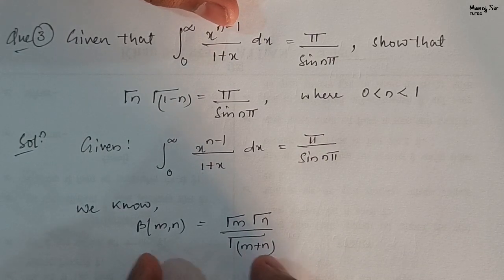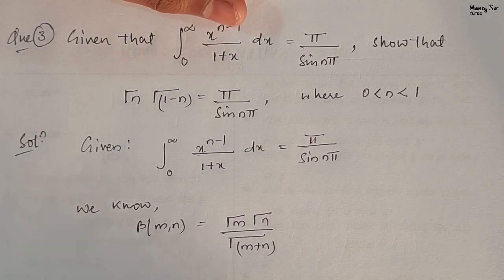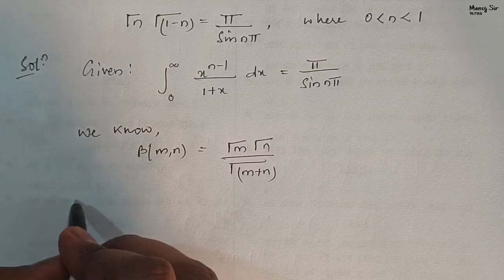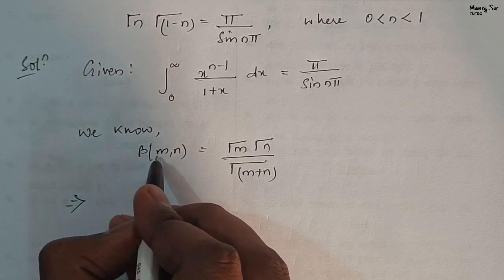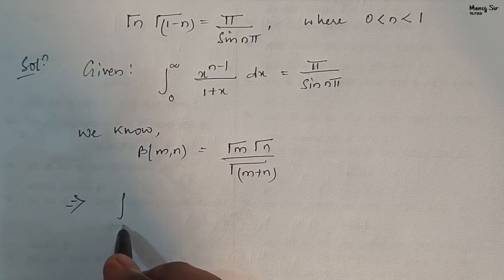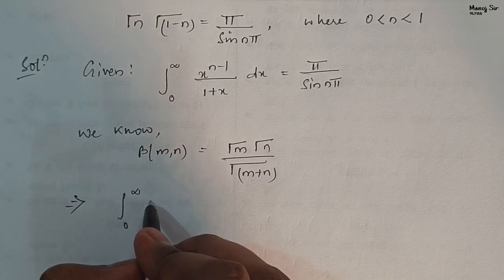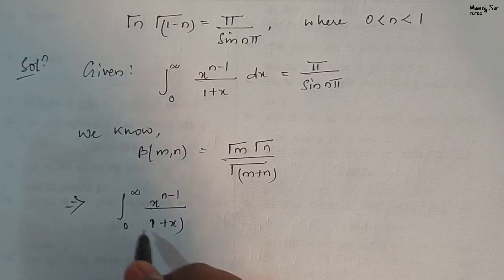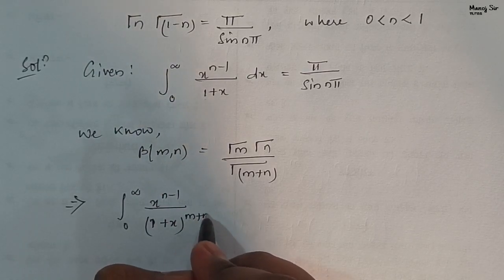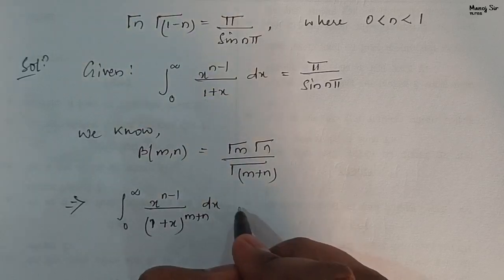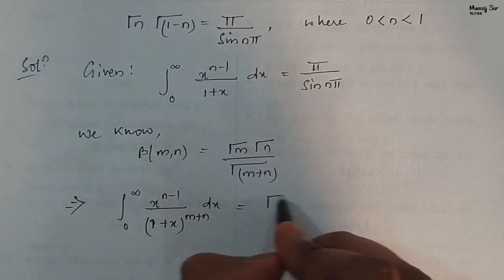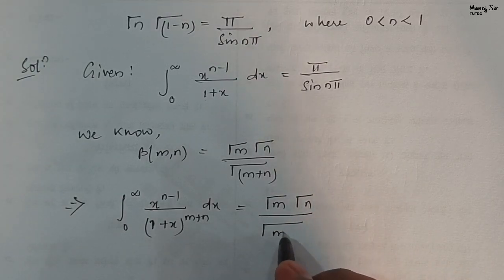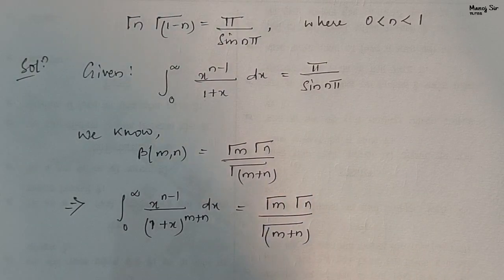This is the relation between beta and gamma function from video number 21. So we can say beta(m, n) equals the integration from 0 to infinity of x to the power n minus 1 upon 1 plus x to the power m plus n dx, which equals gamma(m) gamma(n) upon gamma(m plus n).